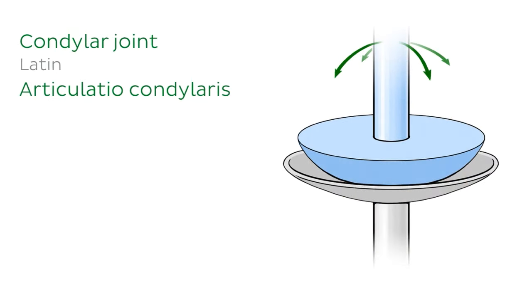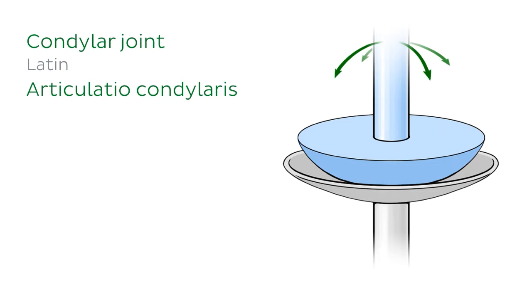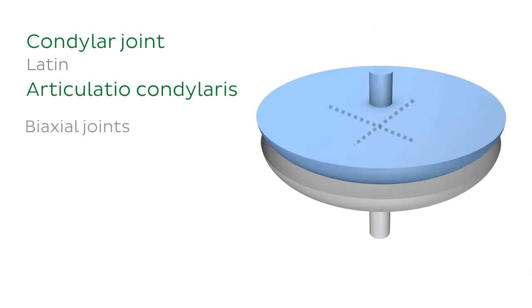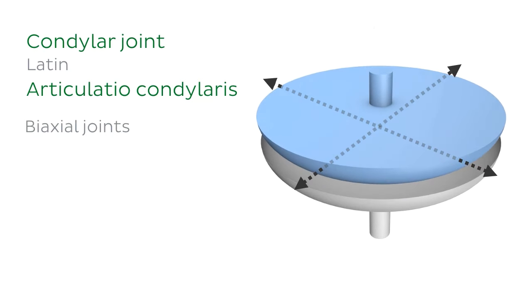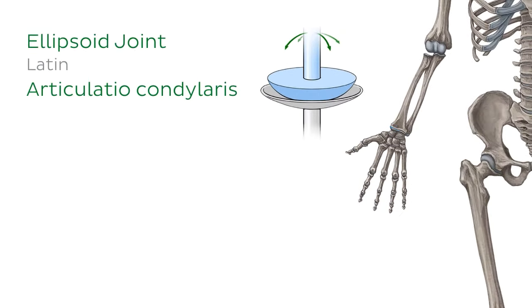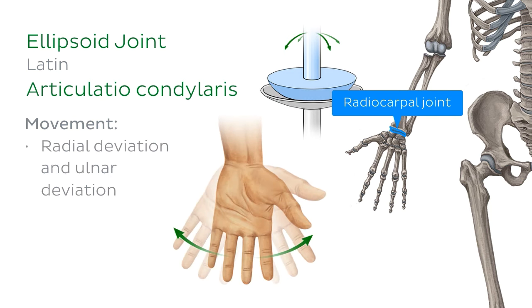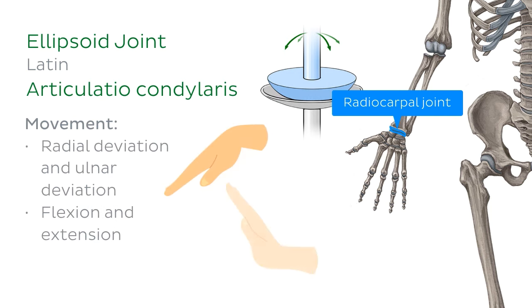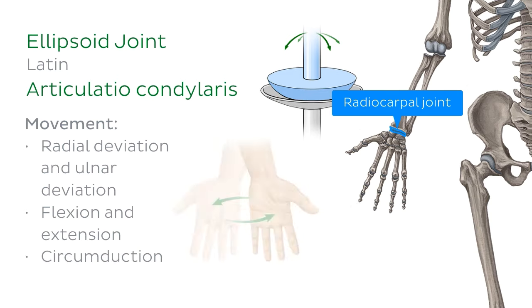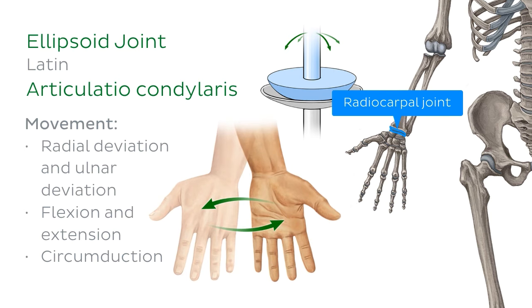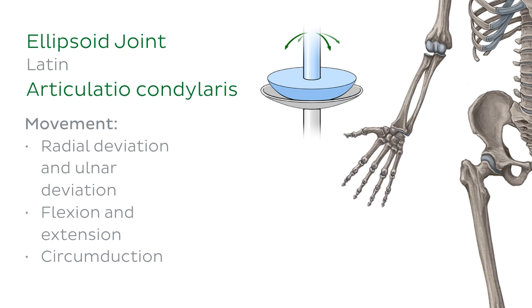Let's move on to talk about the condylar joint, also known as the ellipsoid joint. Condylar joints allow movement around two axes that are at right angles to each other; therefore they are described as biaxial joints. An example is the radiocarpal joint, or wrist joint. The movements that take place at this joint are radial deviation and ulnar deviation, which occur around the sagittal axis, and flexion and extension, which occur around the frontal axis. These movements combine to produce circumduction of the wrist joint — this is the joint that comes in handy when you want to wave hello.